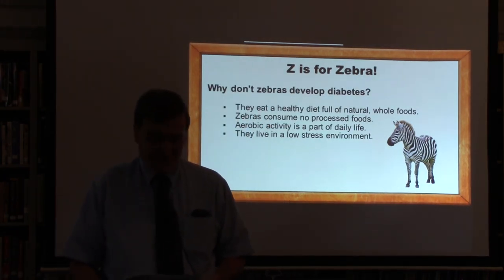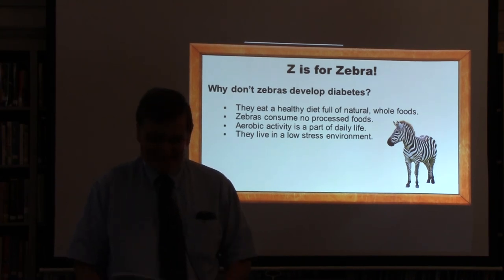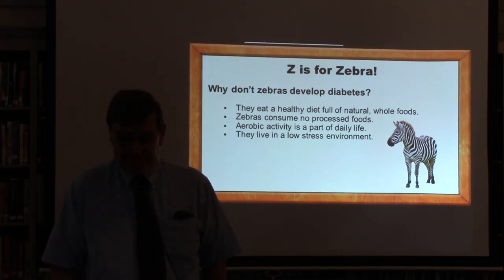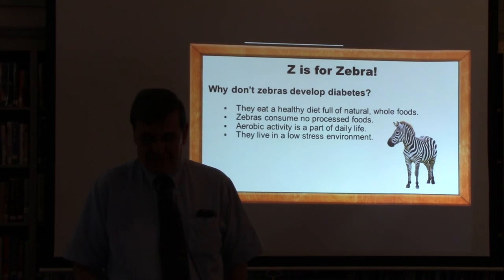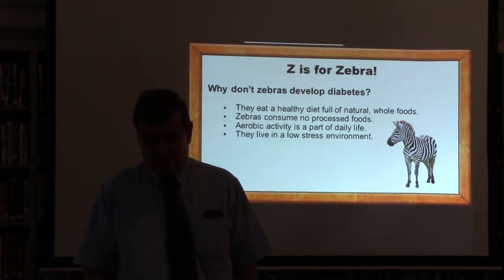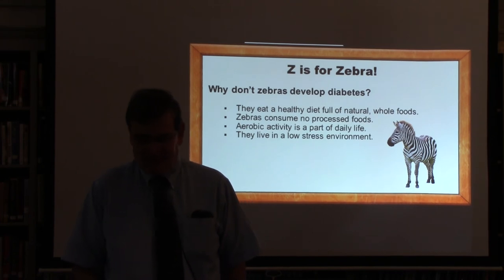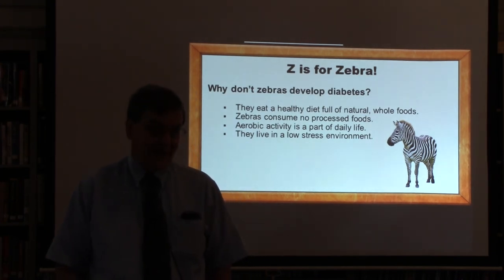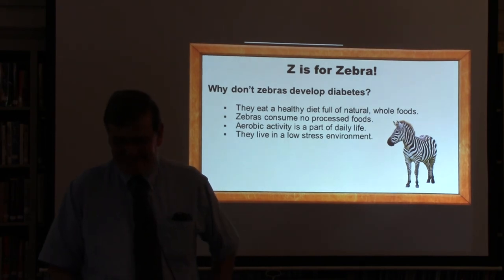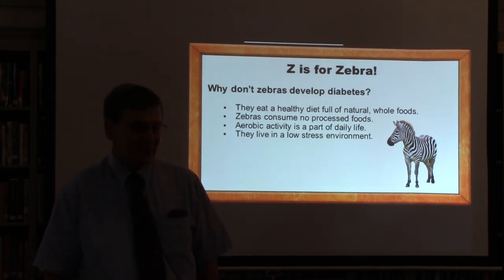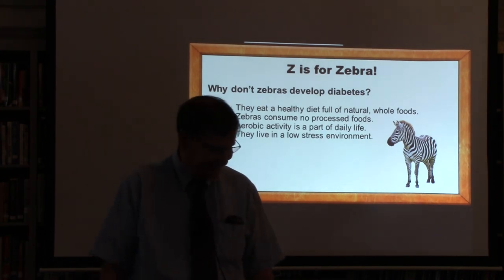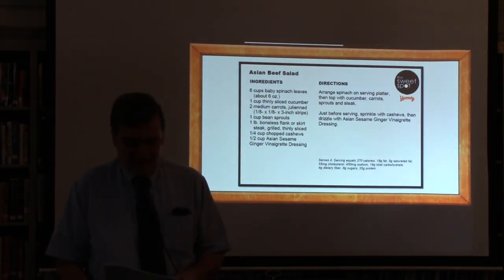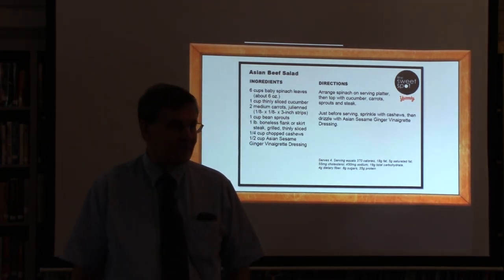Z is for zebra — they had to stretch for this one. Zebras don't get diabetes because they eat a healthy diet full of natural whole foods and have zero access to processed foods and sodas. They're very physically active, running and walking constantly as part of their daily life, and they live in a very low-stress environment most of the time — lions aside. All of those components play a vital role in the healthy lifestyle that helps manage diabetes.